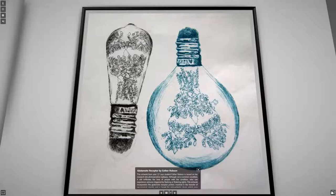This artwork from Year 12 Lee's student, Esther Robson, is based on her research into photosensitive epilepsy. Although not a common condition, it still infiltrates the lives of people with the condition, who can experience seizures triggered by flashing or flickering lights. This artwork incorporates the glutamate receptor protein, involved in the transfer of neurological signals, and a target for anti-epileptic drugs, which may suppress this response. In this piece, Esther represents the lightbulb filament as a 3D image of the glutamate receptor protein, highlighting its significance in fighting seizures triggered by light.